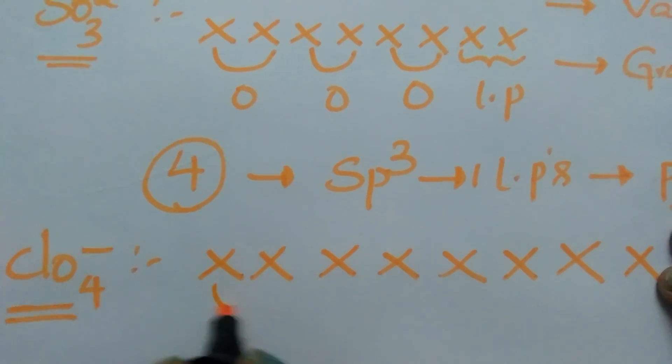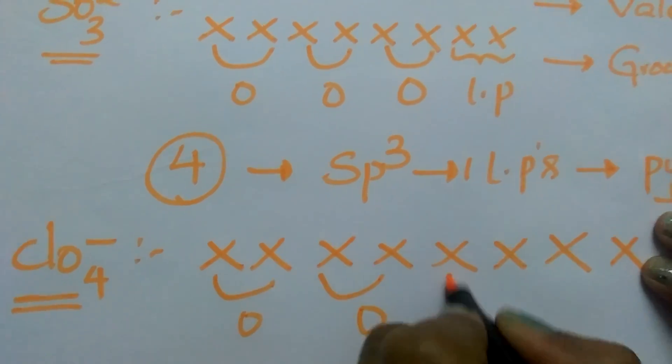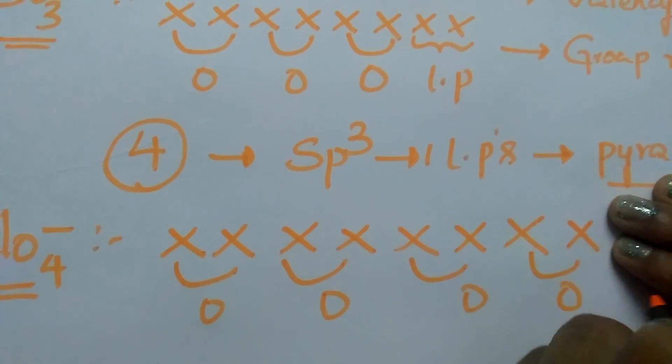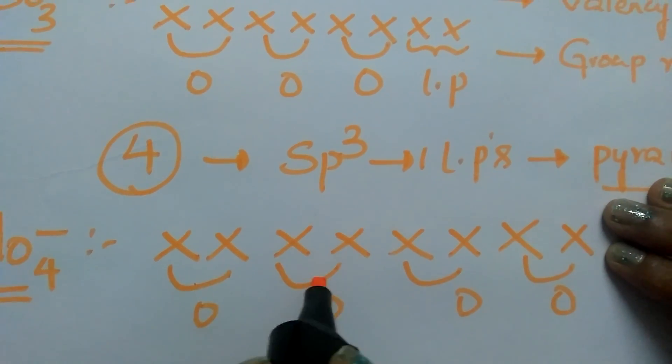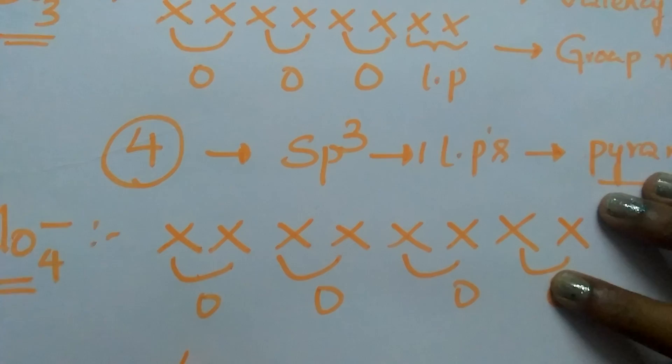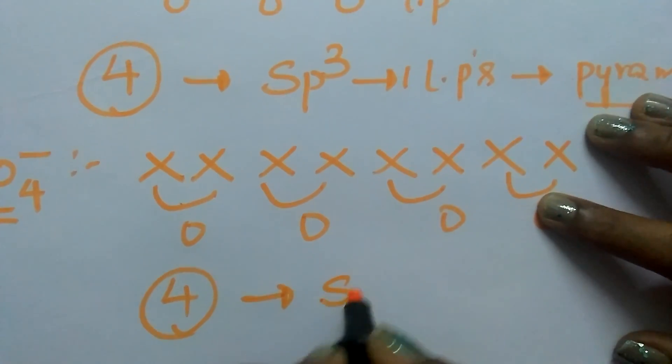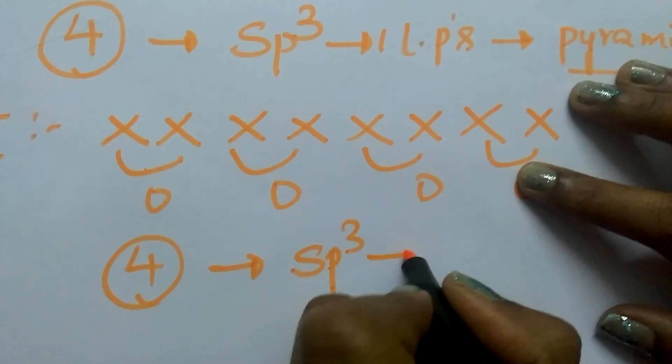Oxygen valency is 2. So write like this. Now count total number of bonds: 1, 2, 3, 4. 4 electron pairs means sp3 hybridization.